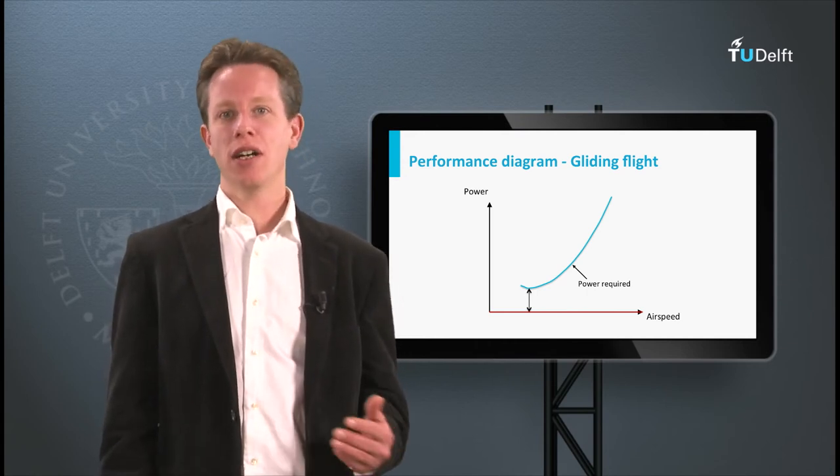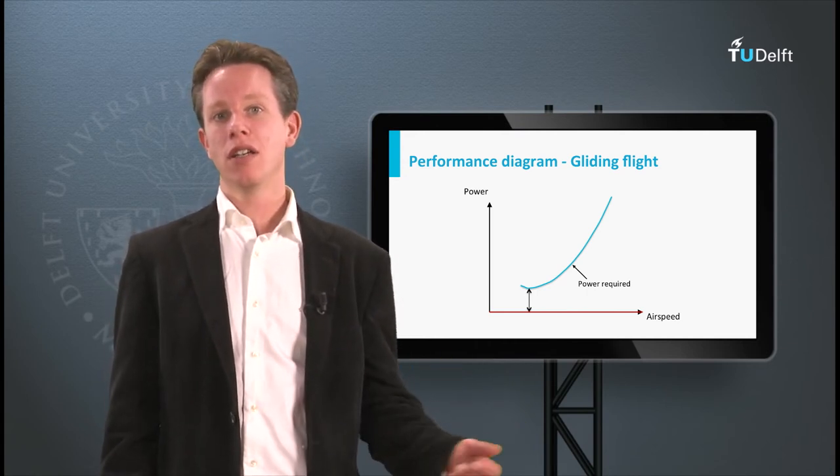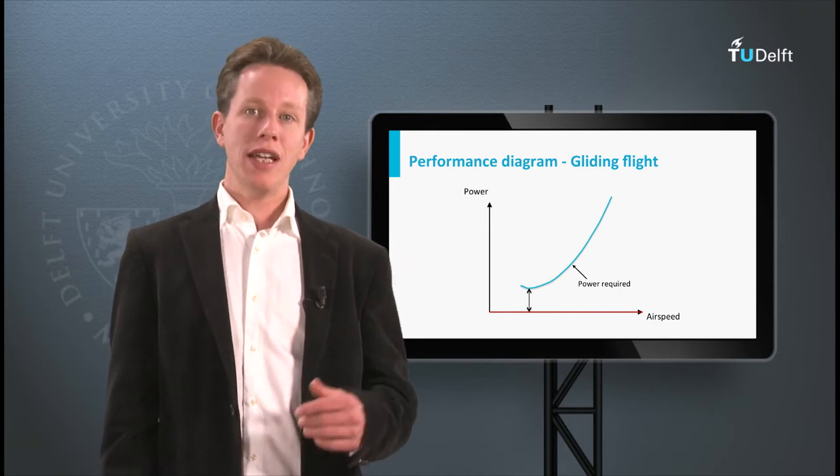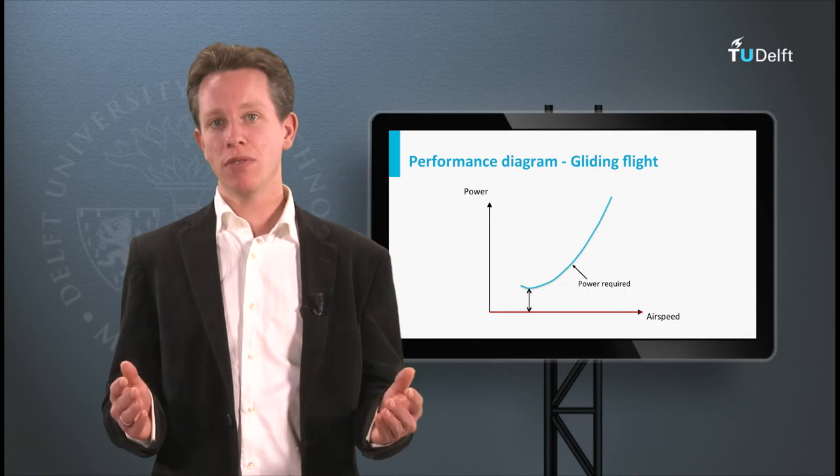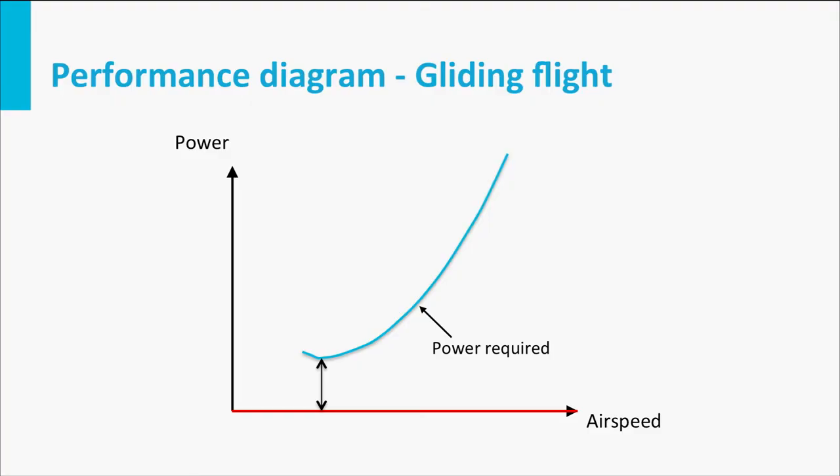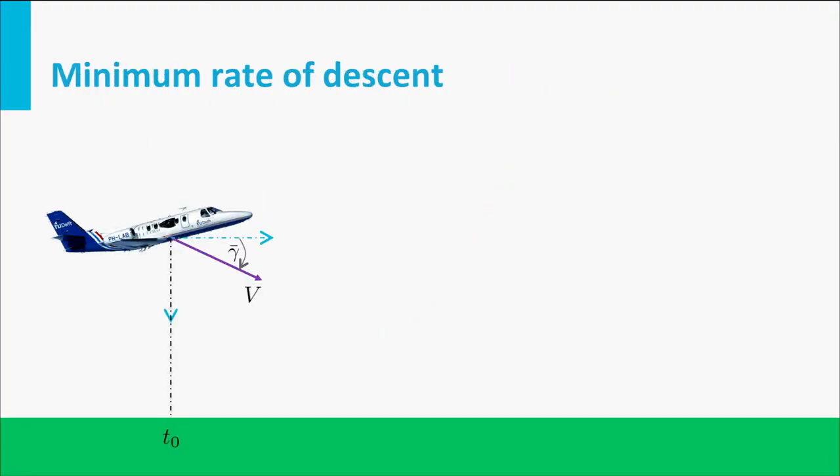The flight path angle is defined as being positive when climbing. So the maximum rate of climb in a gliding flight is in fact the same as the minimum rate of descent. This rate of descent indicates at which time the aircraft will hit the ground. So this means that if we want to glide as long as possible, we should fly at the airspeed for minimum power required.